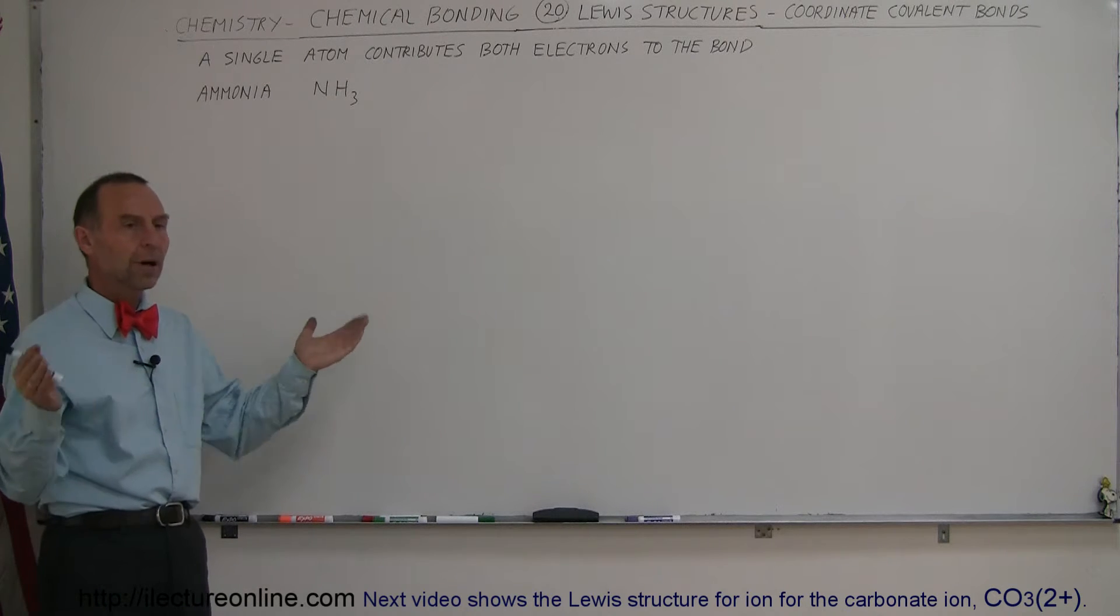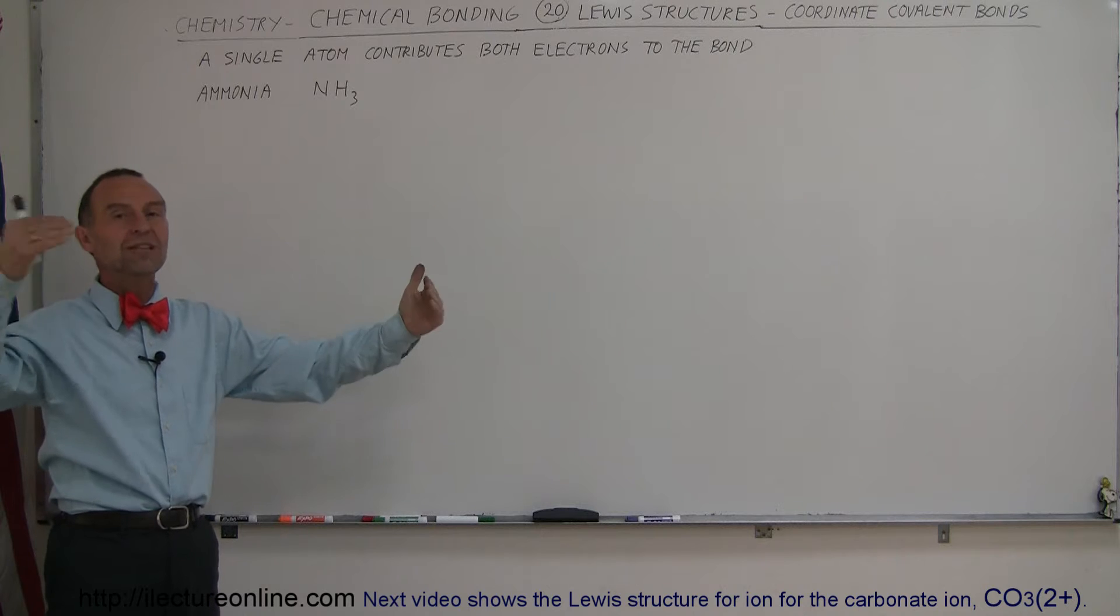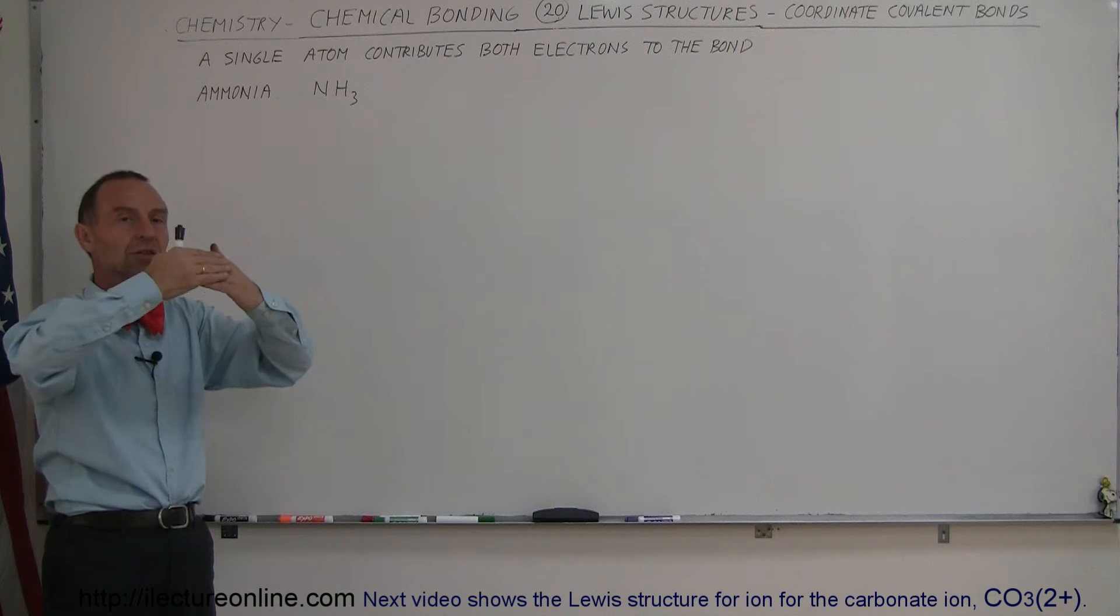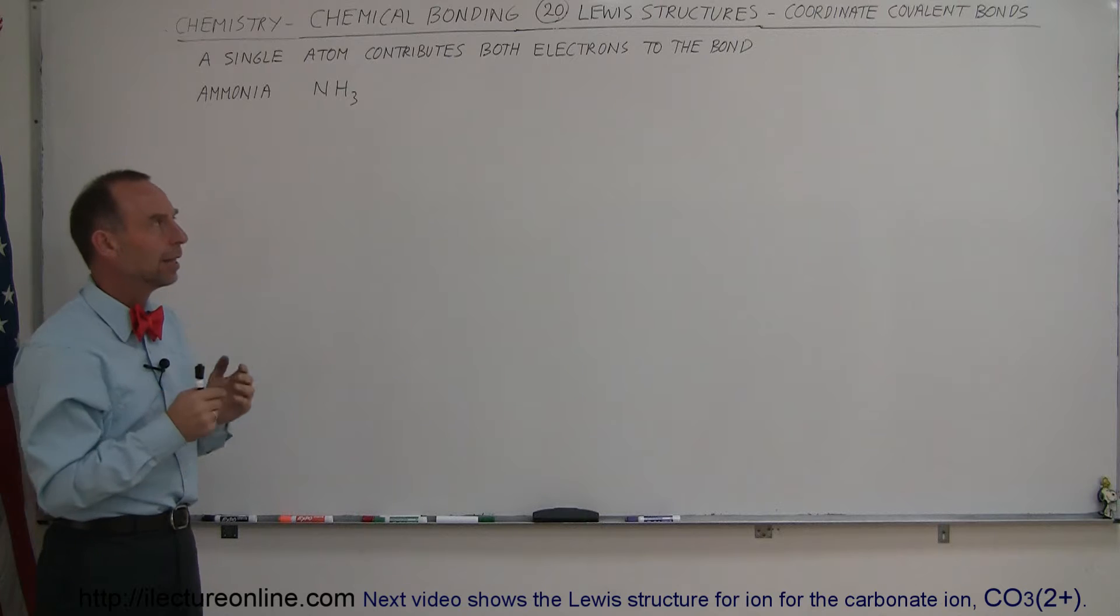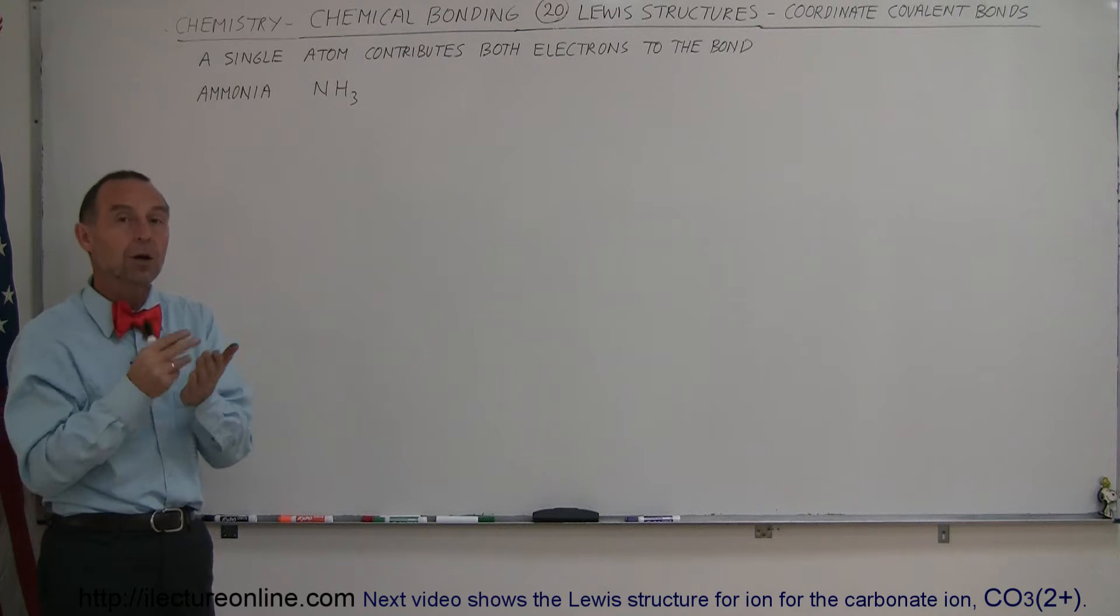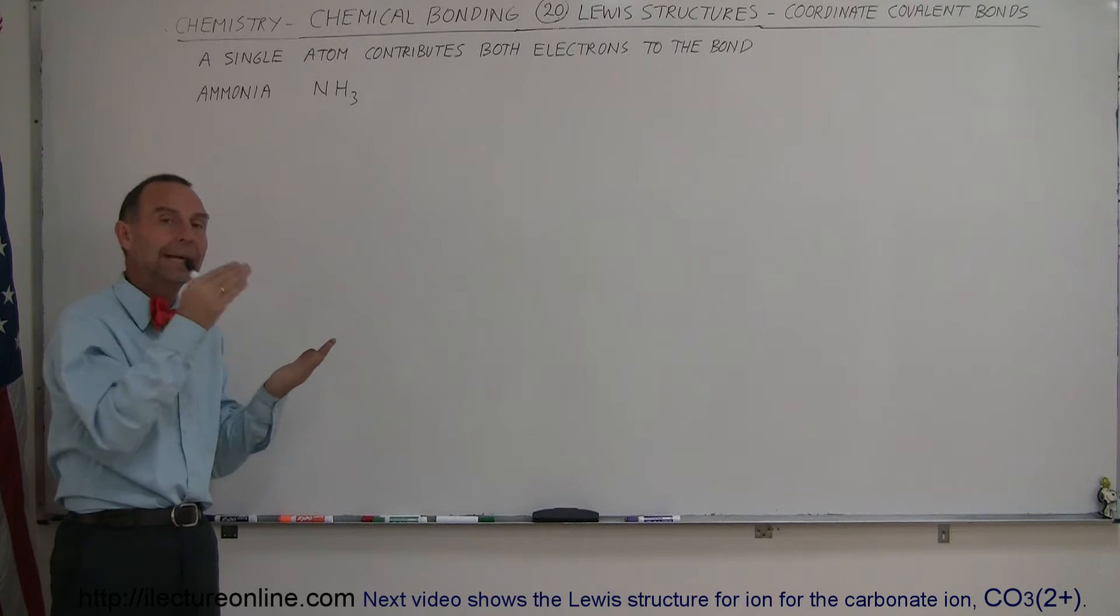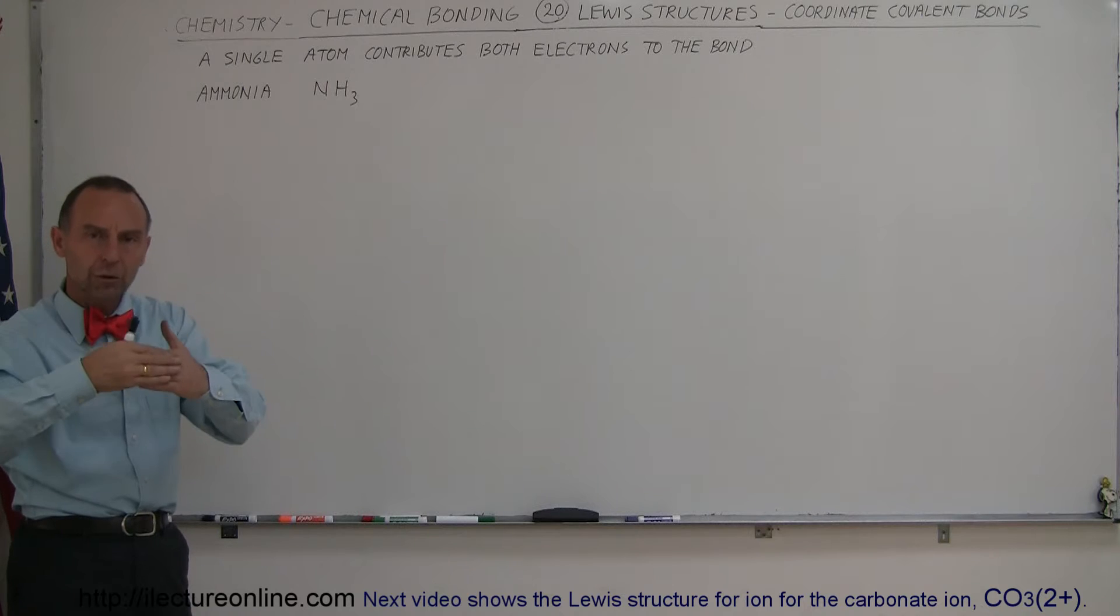Normally, when a bond is made, an electron comes from each atom and they share those electrons in a common bond. But in a coordinate covalent bond, both electrons come from one atom and none from the other, still forming a bond.